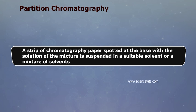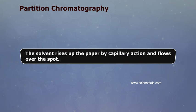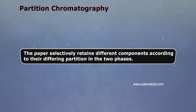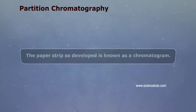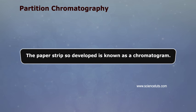A strip of chromatography paper, spotted at the base with the solution of the mixture, is suspended in a suitable solvent or mixture of solvents. The solvent rises up the paper by capillary action and flows over the spot. The paper selectively retains different components according to the differing partition in the two phases. The paper strip so developed is known as a chromatogram.